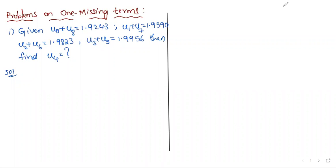Hi, welcome to the math class. Today I am discussing some problems on one missing term. Problem one: given u0 plus u8 is equal to 1.9243, u1 plus u7 is equal to 1.9590, u2 plus u6 is equal to 1.9823, u3 plus u5 is equal to 1.9956. Find u4.